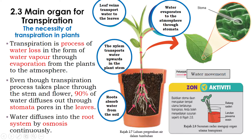Transpiration occurs across the stem, the flower, and the leaves, but mainly about 90% of water loss is through the stomatal pores — the openings at the leaf. This answers our question on which is actually the main organ for transpiration.